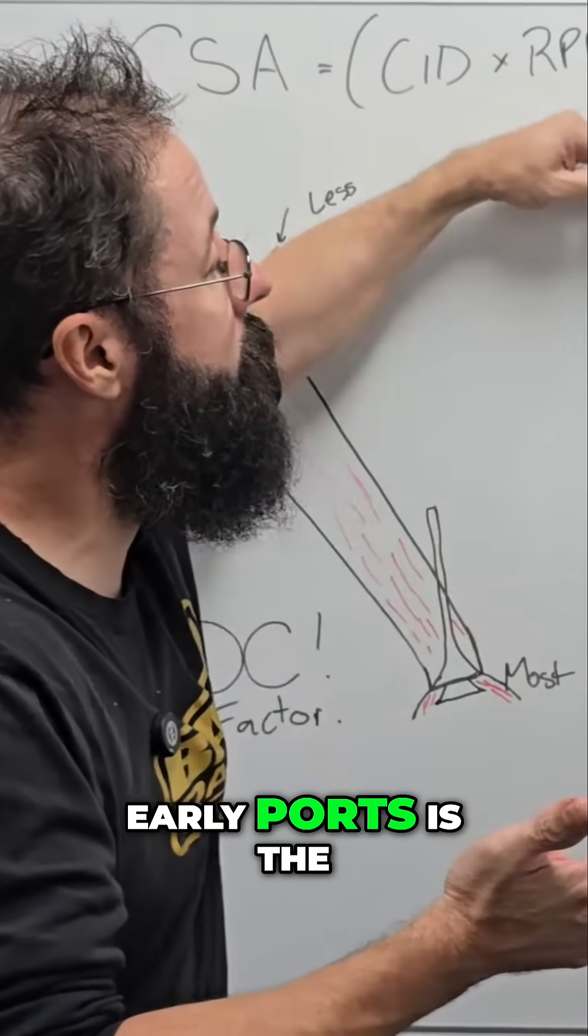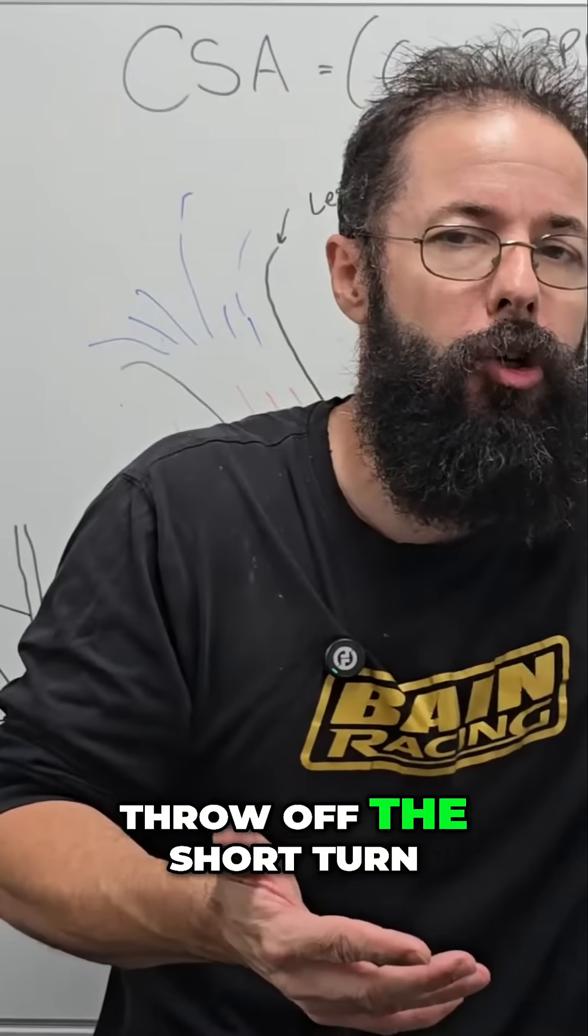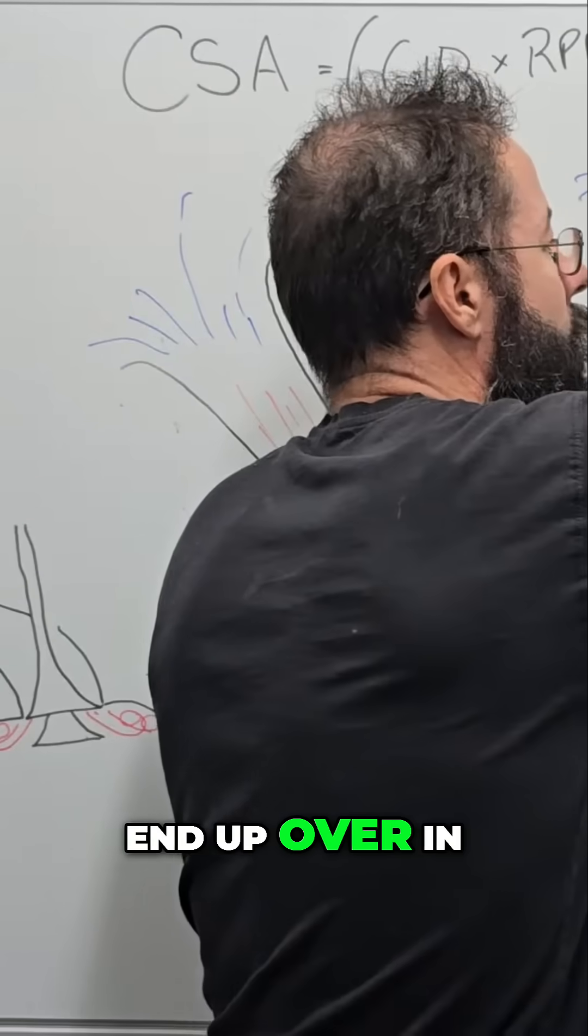The problem with these early ports is the fuel would want to come down, then it would want to throw off the short turn, and it would want to end up over in this corner.